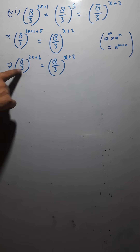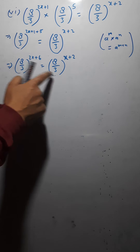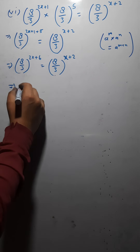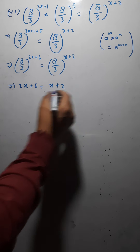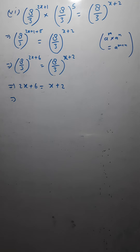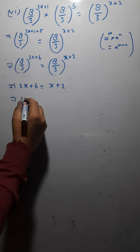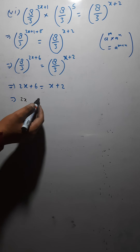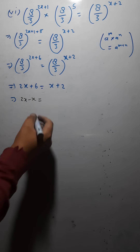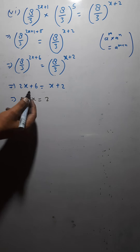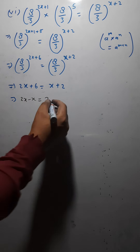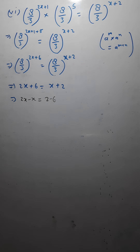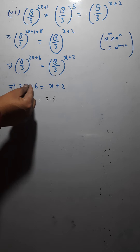Since the bases are the same, we equate the exponents: 2x plus 6 equals x plus 2. We need x at one place. So 2x remains on the left, and x comes to the left — its sign is plus so it becomes minus x. This 2 remains on the right, and 6 goes to the right — its sign is plus so it becomes minus 6. So 2x minus x equals 2 minus 6.